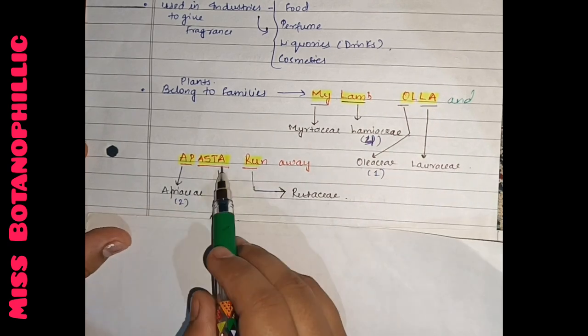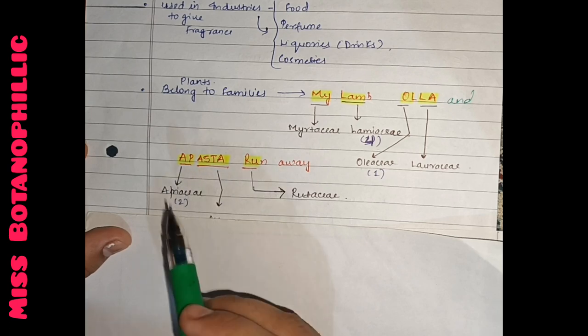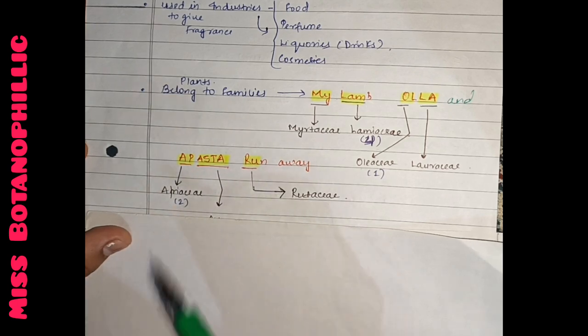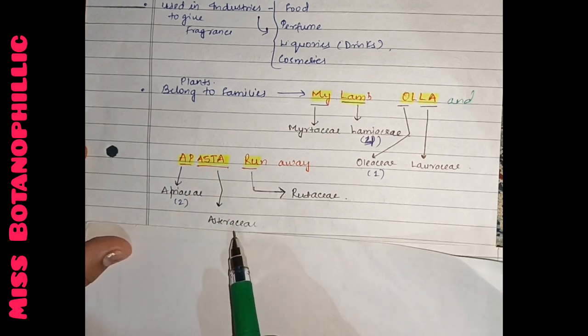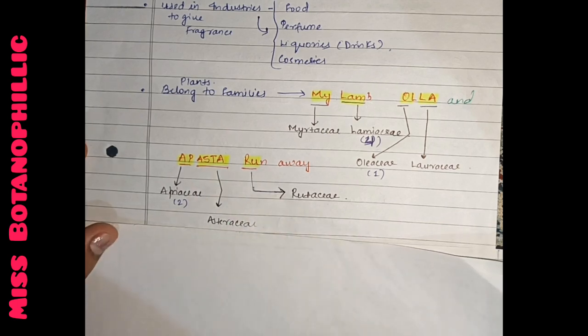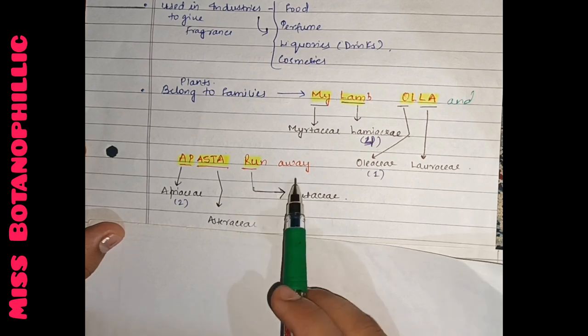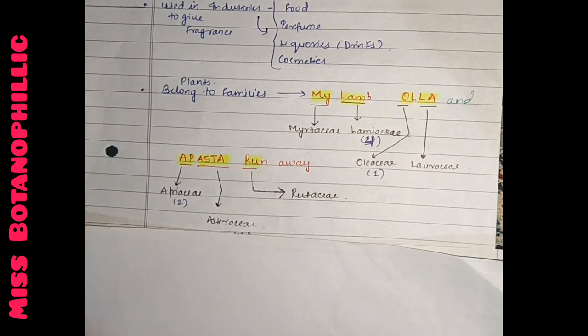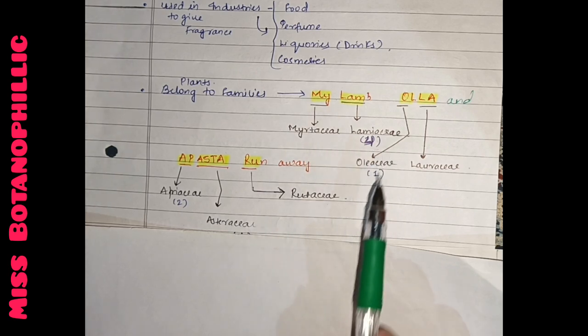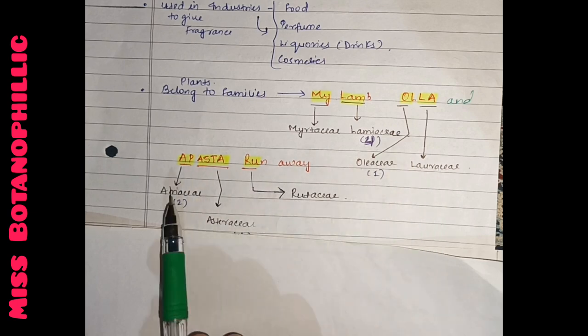La word is Loraceae family. Apesta means Apiaceae family, the coriander family. I have included two members of these. Asteraceae family means sunflower family.